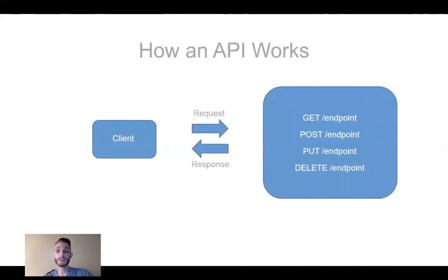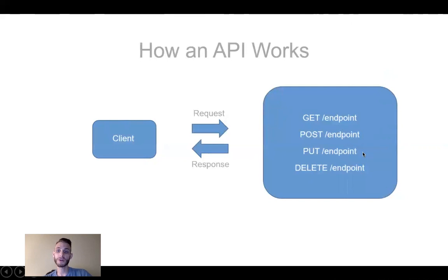In the given diagram, you see the client sends a request to the server, but it can be one of four different kinds of requests: it can be a GET request, POST request, PUT request, or DELETE request. Each request will carry out a different operation with our database.